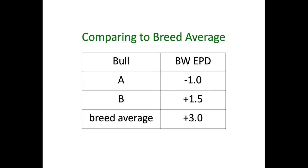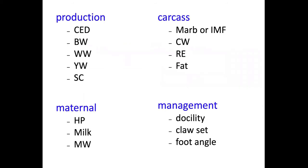Another way to evaluate EPDs is comparing back to the breed average. Say the breed average was 3 and Bull A was negative 1 — don't get hung up on positives or negatives, just look at the absolute difference compared to another bull or back to the breed average. Bull A would be 4 pounds lighter than breed average at birth — a fairly easy calving bull. Bull B at 1.5 is still a pound and a half below breed average, also fairly easy calving. Focus on how bulls compare to each other or to the breed average.